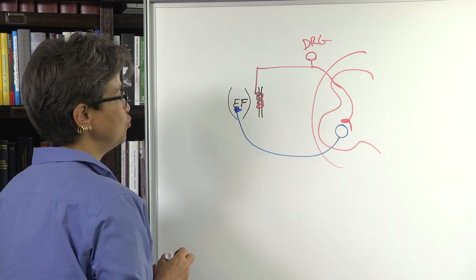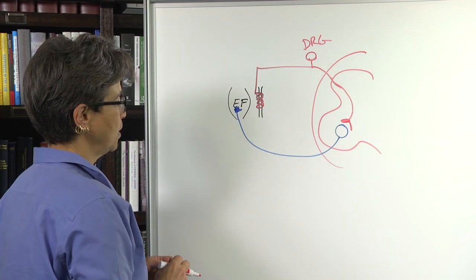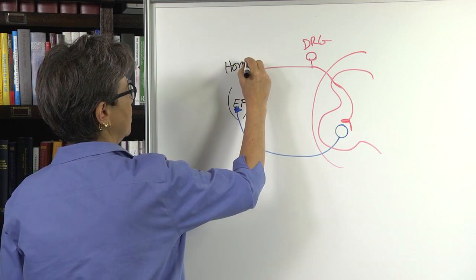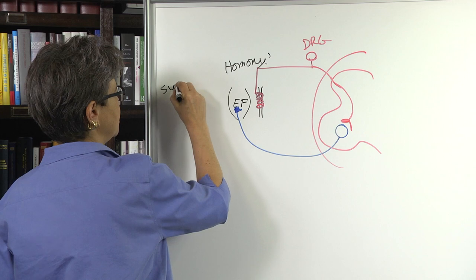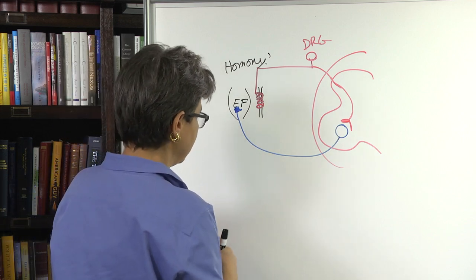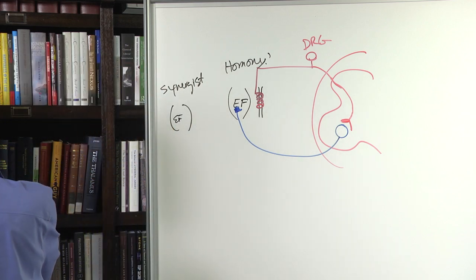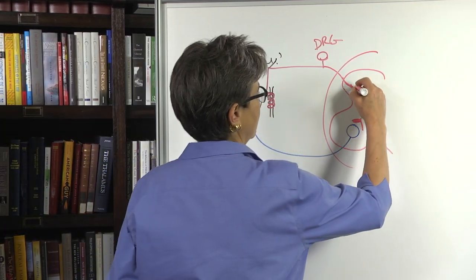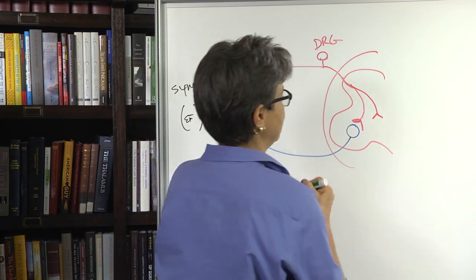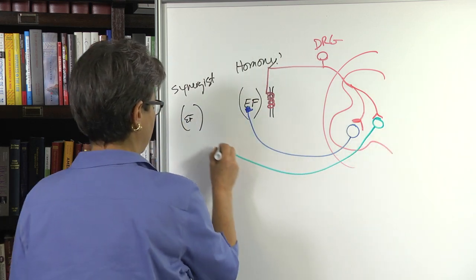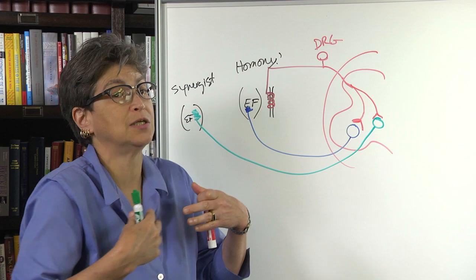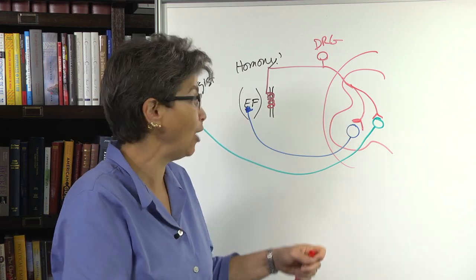We're going to add two extra features to this. One is that there is another muscle over here. This is the homonymous muscle, and here is a synergist. And it also has extrafusal fibers. And the same message from this 1A afferent is also going to go over to the motor neuron pool that innervates this synergist muscle. So we're not only going to activate the homonymous muscle, we're going to activate muscles whose action helps the homonymous muscle.